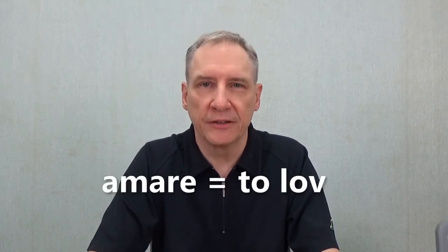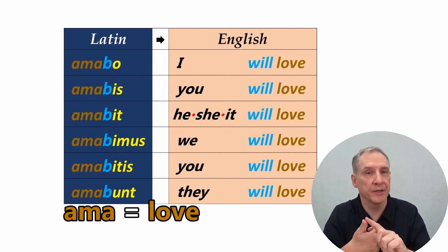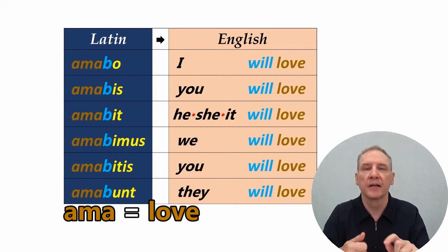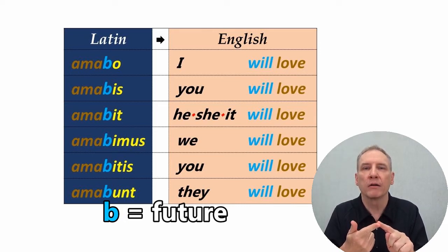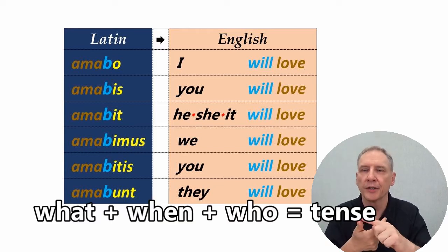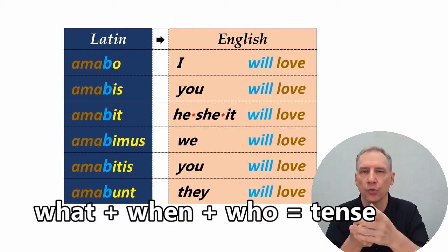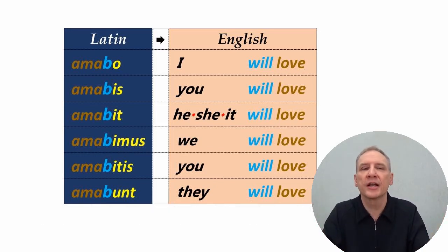Look at the Latin verb amare, meaning 'to love.' The base spelling is A-M-A, which tells us what the meaning is — love. The letter B indicates when it will happen, in the future, while the letters after the B tell us who is doing this action. What, when, and who in one word is the meaning of tense. So of course, you cannot find this one-word future tense in English.